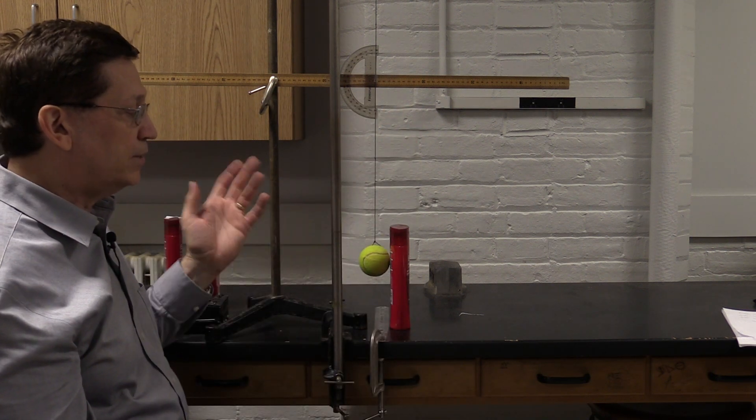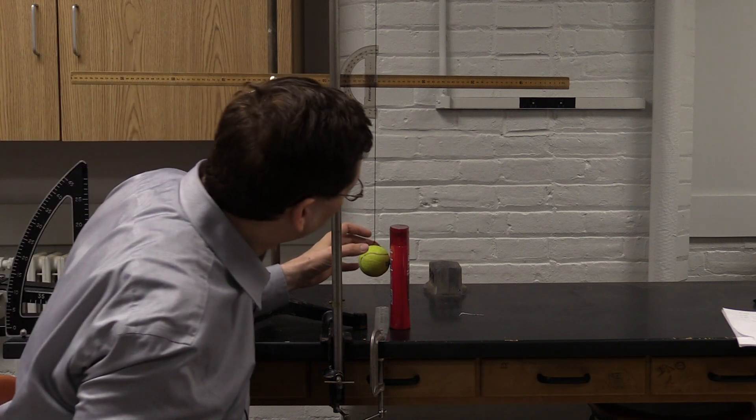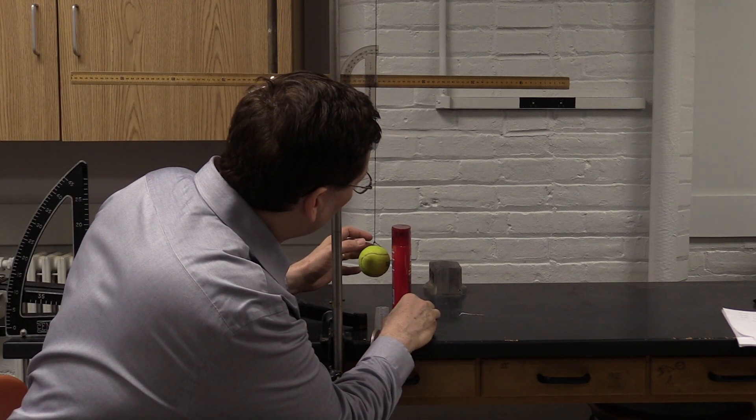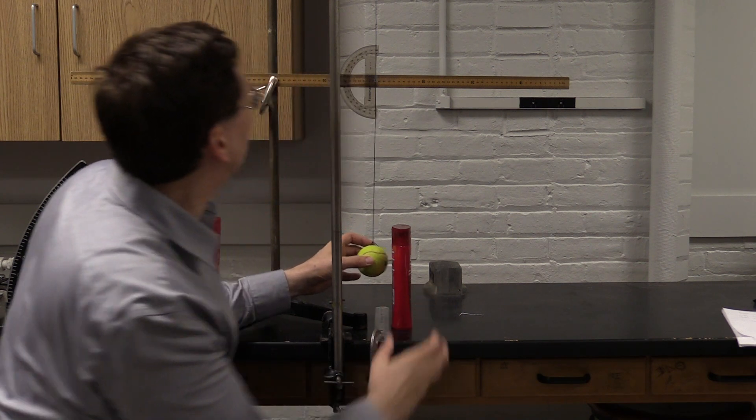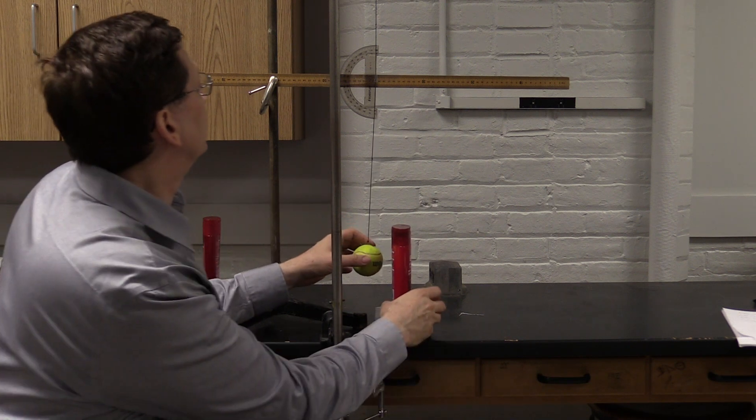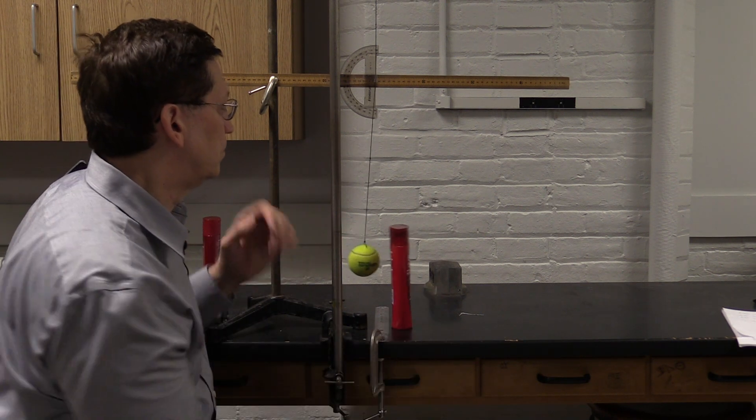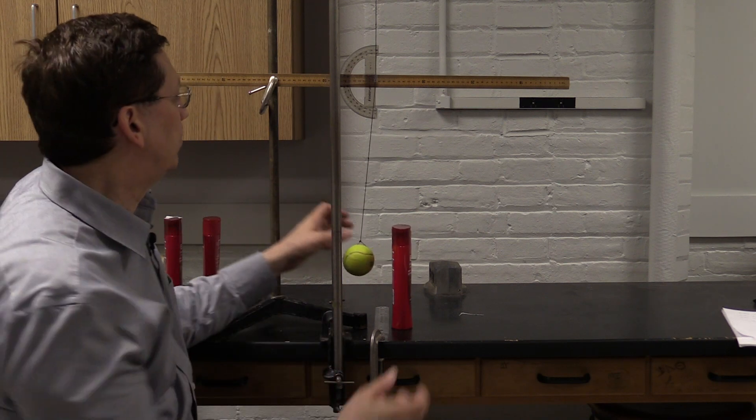Watch what happens as it impacts this shampoo bottle. So you can see that for an angle of 10 degrees, nothing happens. It just bounces back. For an angle of 15 degrees, the bottle's still stable.